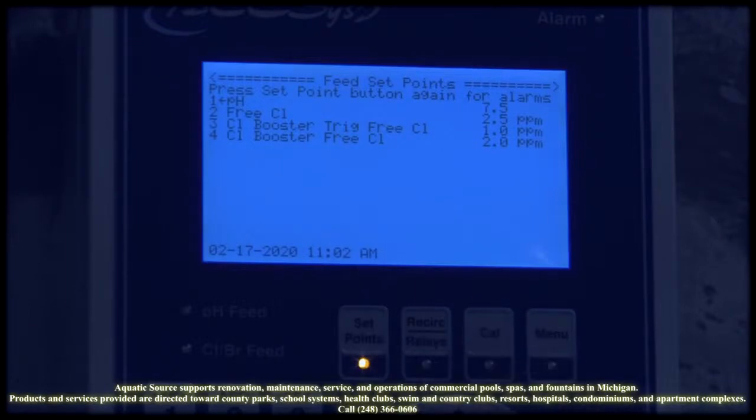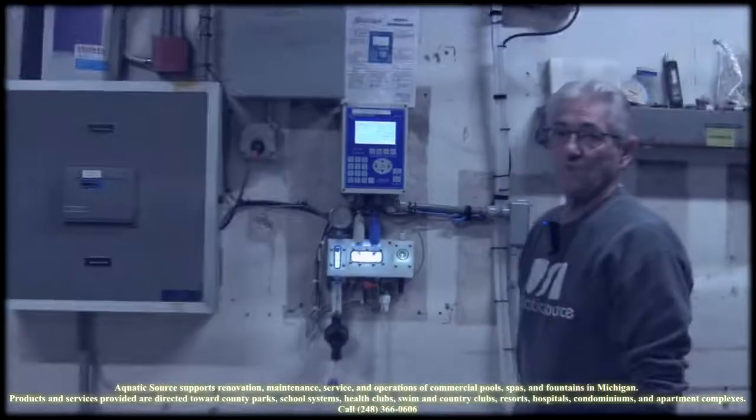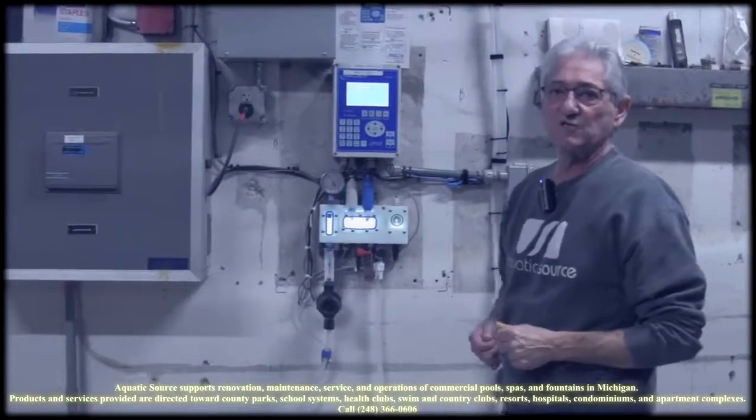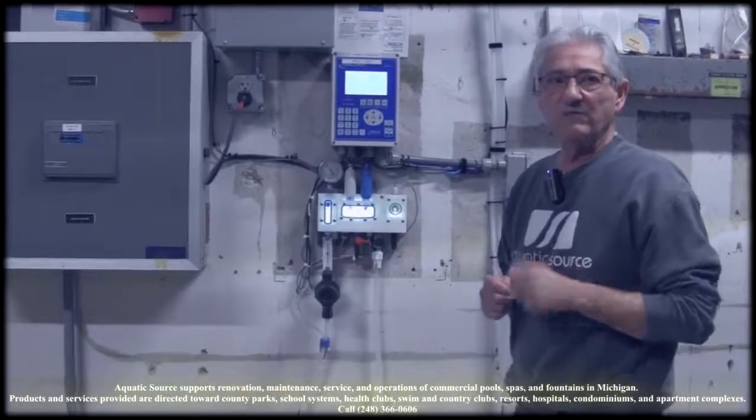Normal cleanings on these, or what you need to do to maintain it, is periodically you need to pull out your probes by shutting off the flow to it. You would turn the power off to the unit, unthread your ORP and your pH probe. You can take a solution of Dawn dish soap or any soap, dip the tip of it in, and use a toothbrush to remove any oil.